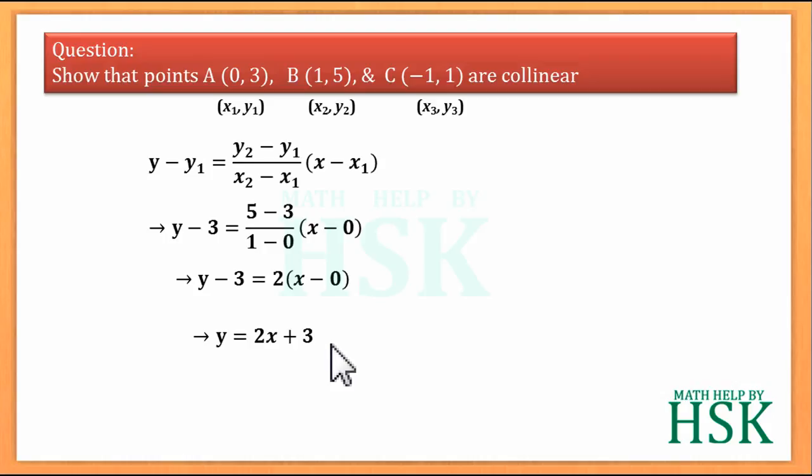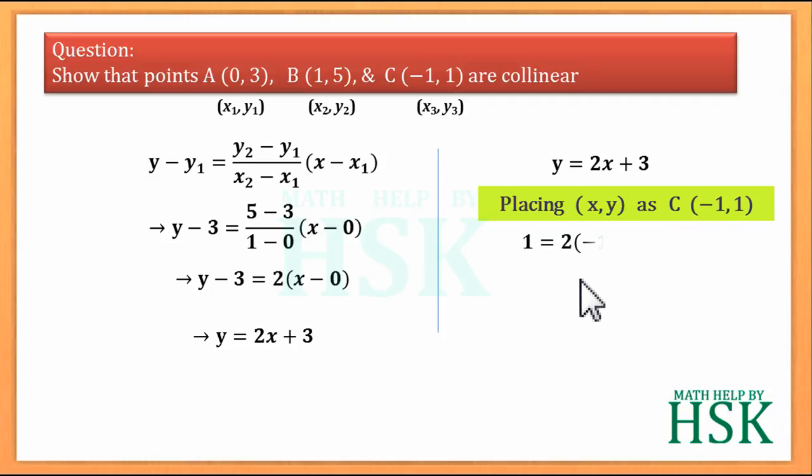Now we take the equation of line and place X, Y as minus 1, 1, which gives 1 is equal to 2 into minus 1 plus 3, or 1 is equal to 1. That is, left hand side is equal to right hand side. Hence the point C satisfies the equation of line.